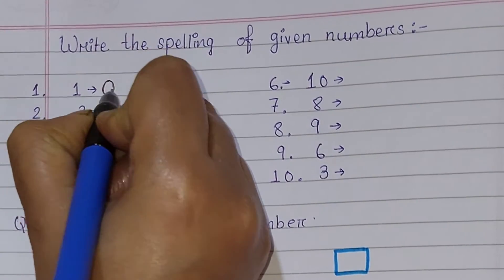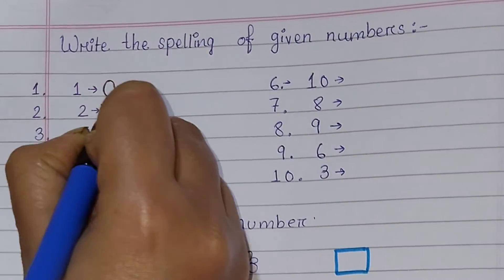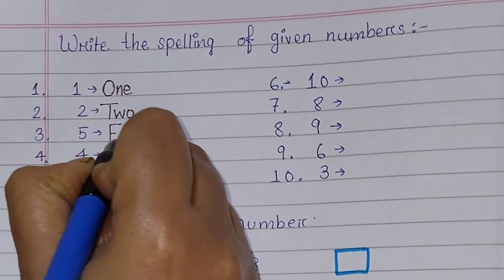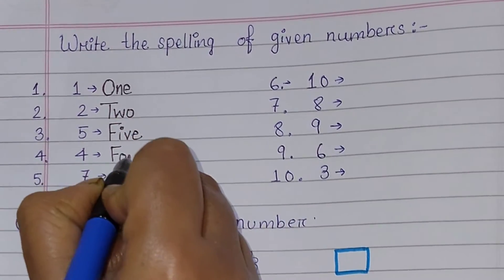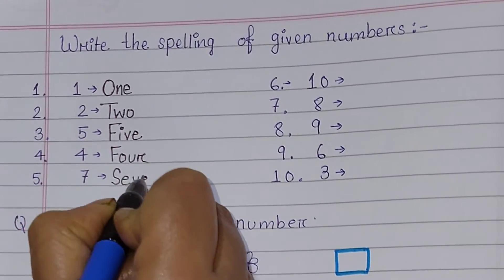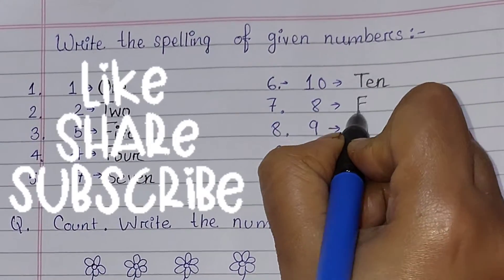Write the spelling of the given numbers 1 to 10. It is very important for the kids. Practice makes a child perfect.